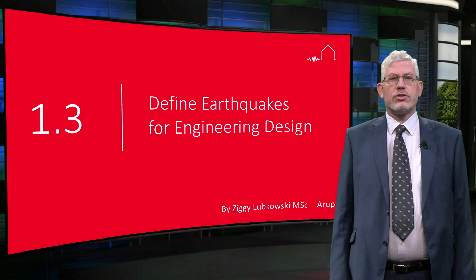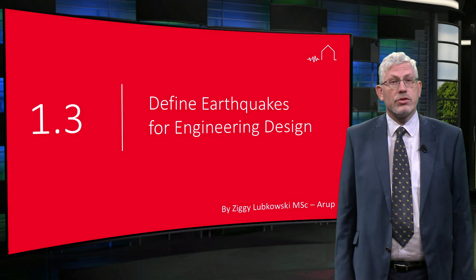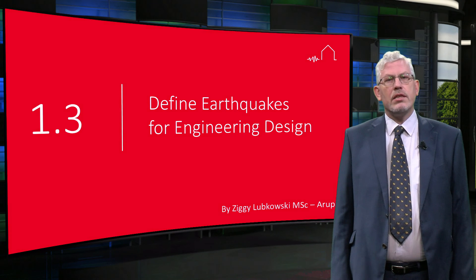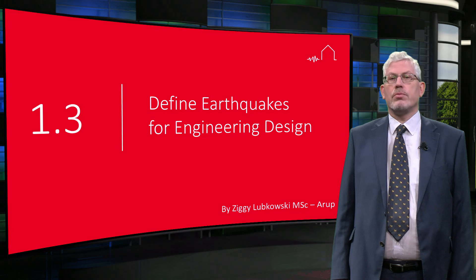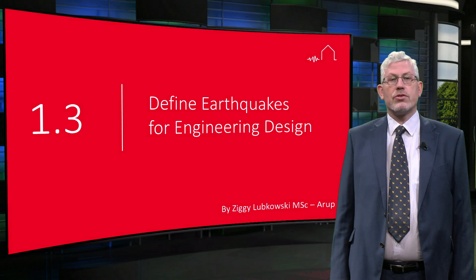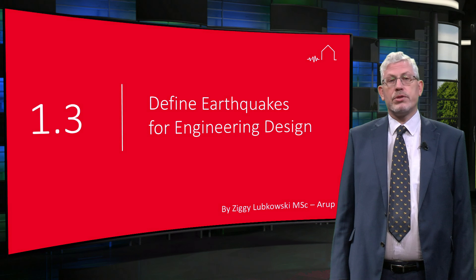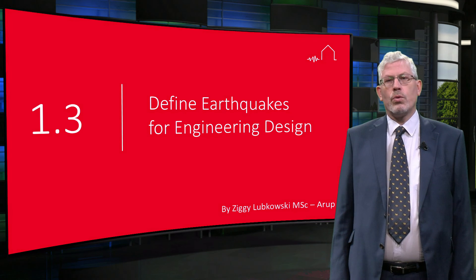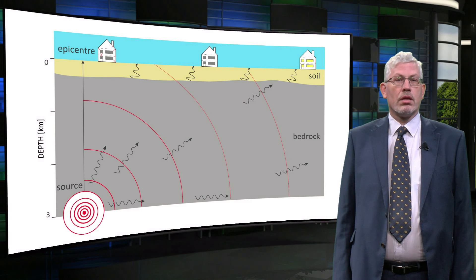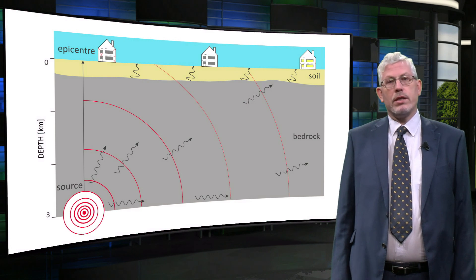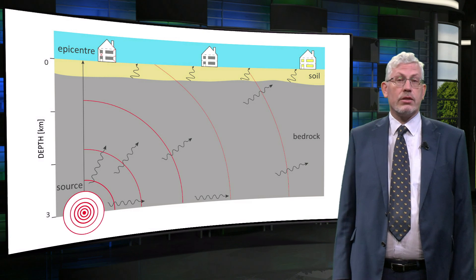Hello. The first two lectures have described different types of earthquakes and the resulting seismic waves. In this lecture we will discuss some of the basic seismological and engineering terms that are used to define the size of an earthquake and how they are used for engineering purposes. We will consider how we measure the size of an earthquake. There are two principal ways to measure the size of an earthquake. These are known as intensity and magnitude.